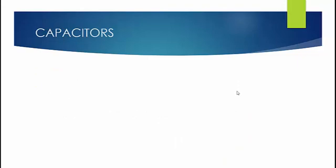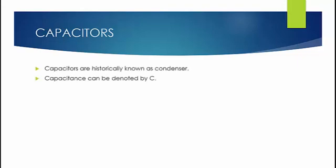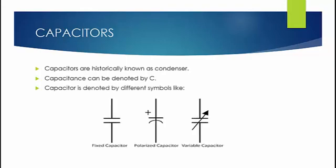Now let us point out some common notations and terms regarding capacitance. Capacitors are historically known as condenser. Capacitance is denoted by a symbol of capital C and capacitors can be denoted by different symbols depending on what type of capacitance they contain.